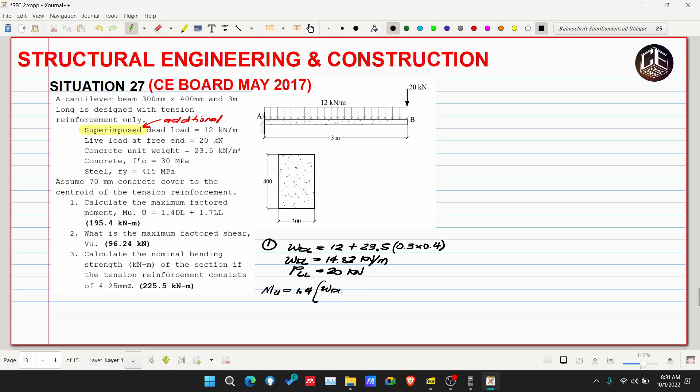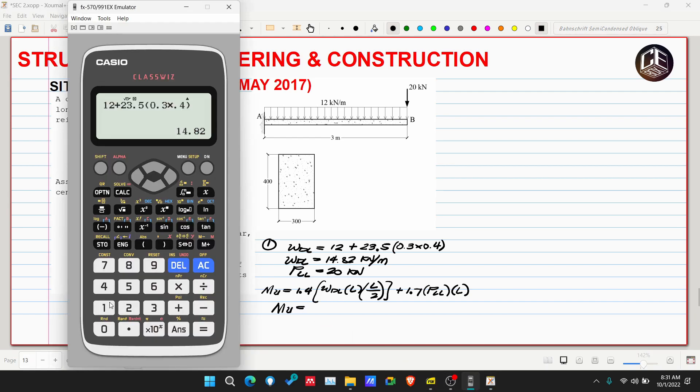This is WDL multiplied by L multiplied by L over 2, then plus 1.7 multiplied by PLL multiplied by L.